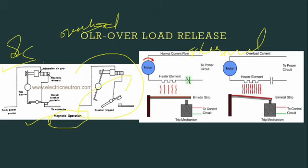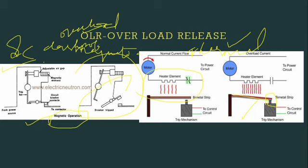The Thermal Overload Release Coil protects the motor against overload conditions using a heating element. With a normal current flow, a bimetal strip is used to control the circuit. When there is excess heat, the bimetal strip bends and automatically trips the control circuit. This is called a Thermal Overload Release Coil.